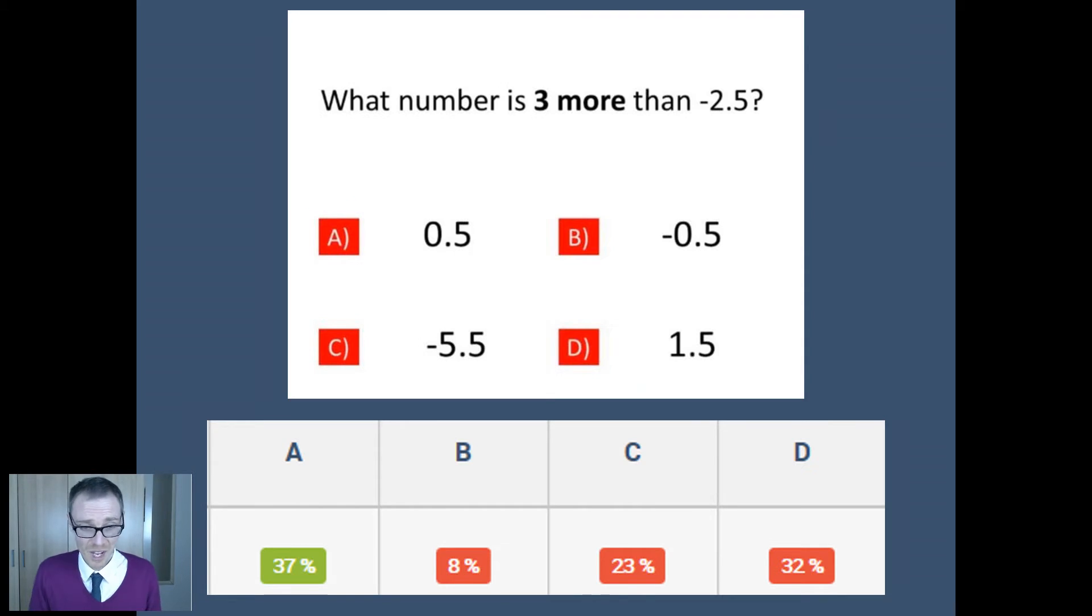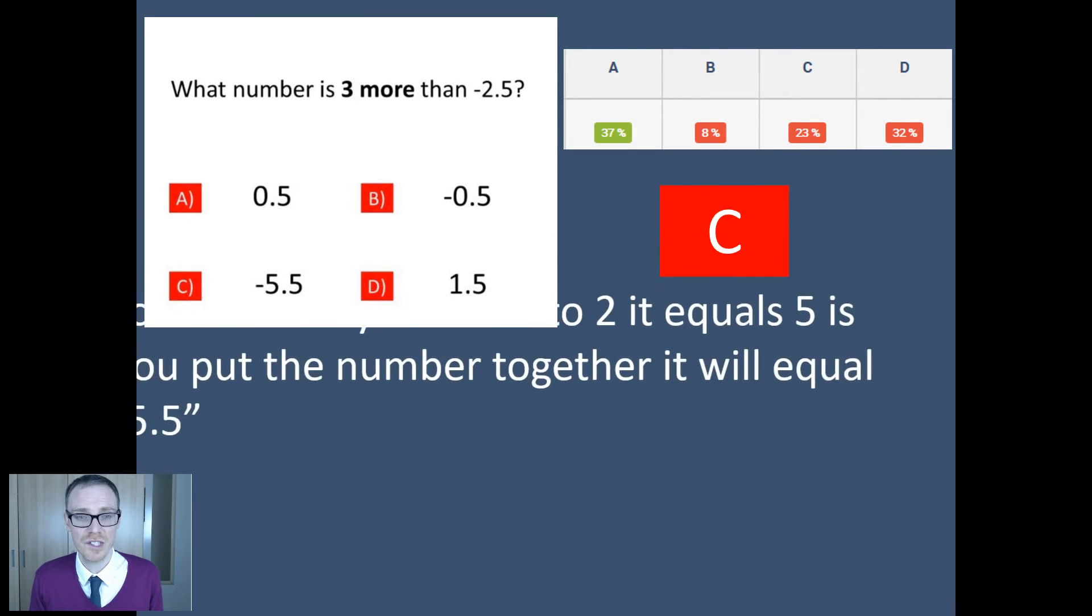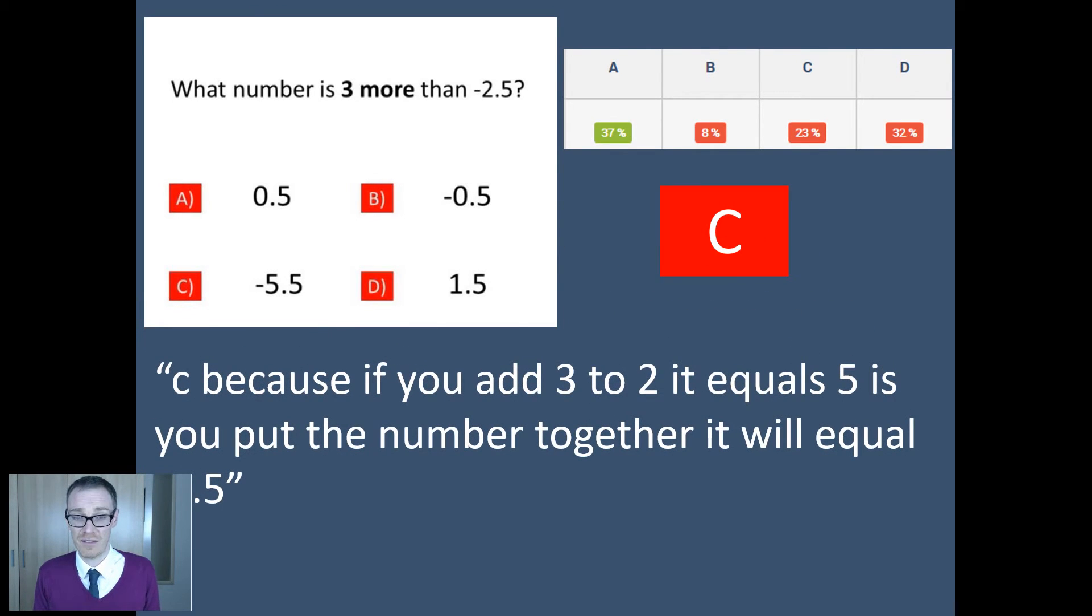So again, A is the right answer. Only 37% are getting this right, followed by B, then C, and then D. Again, 32% are going for 1.5. Why are they going for this? Well, let's have a read of their reasons.